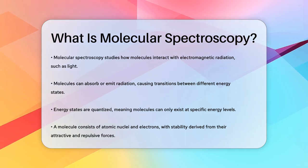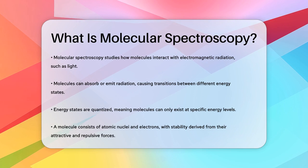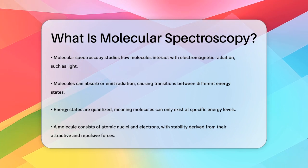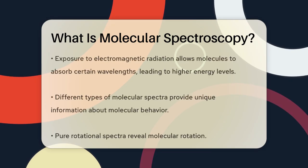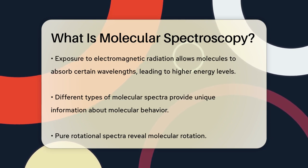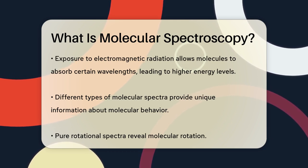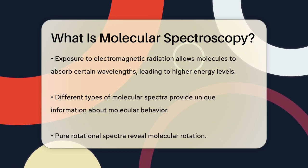Imagine a molecule as a tiny bundle of atomic nuclei surrounded by electrons. The stability of this molecule comes from the balance between the attractive and repulsive forces among these nuclei and electrons. When a molecule is exposed to electromagnetic radiation, it absorbs certain wavelengths, which helps it jump to higher electronic, vibrational, or rotational energy levels.